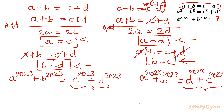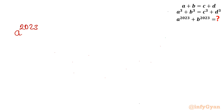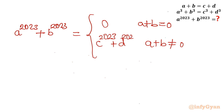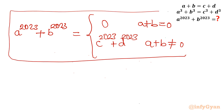To conclude: a to the power 2023 plus b to the power 2023 equals 0 when a plus b equals 0, and equals c to the power 2023 plus d to the power 2023 when a plus b is not equal to 0. This is our final answer. I hope you liked this video — do not forget to like, share, and subscribe. Bye bye, good luck!